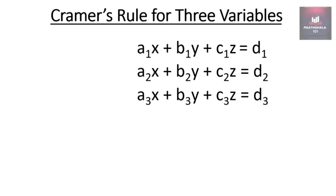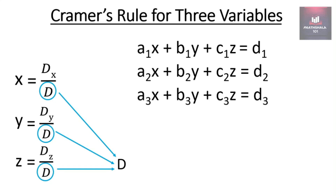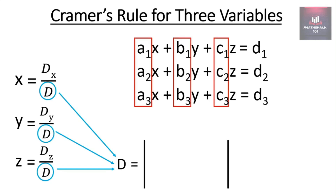The other method is Cramer's Rule. We will learn how to use Cramer's Rule: for x the value will be Dx by D, for y it is Dy by D, and for z it is Dz by D. Now let's understand how to find the value of D. D will be equal to the determinant of x coefficients, y coefficients, and z coefficients.